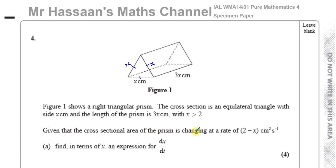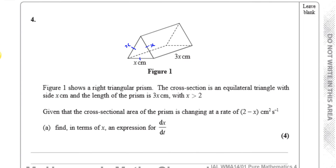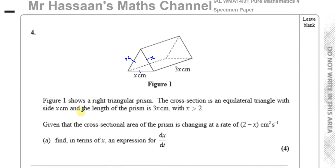Given that the cross-sectional area of the prism is changing at a rate of 2 minus x centimeters squared per second, we need to find in terms of x an expression for dx/dt. The cross-sectional area means just the area of the flat triangular shape — the equilateral triangle that is the same all the way through the prism. So the cross-sectional area of the prism is basically just the area of this triangle.